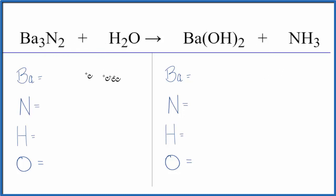So as we look at this reaction, the first thing we need to do is count up the atoms on each side. Three barium atoms, two nitrogens, two hydrogens, and then just the one oxygen.